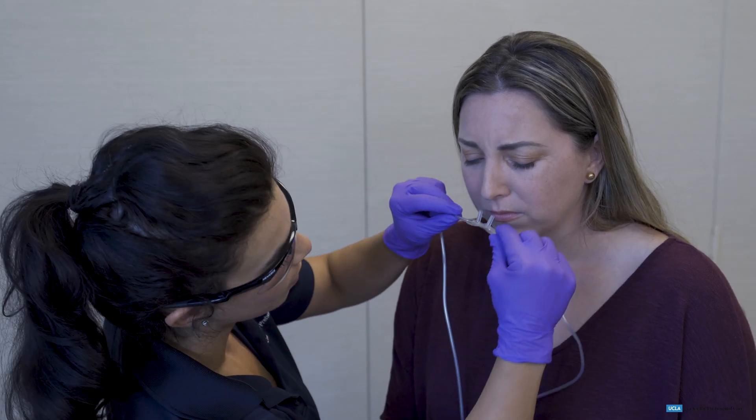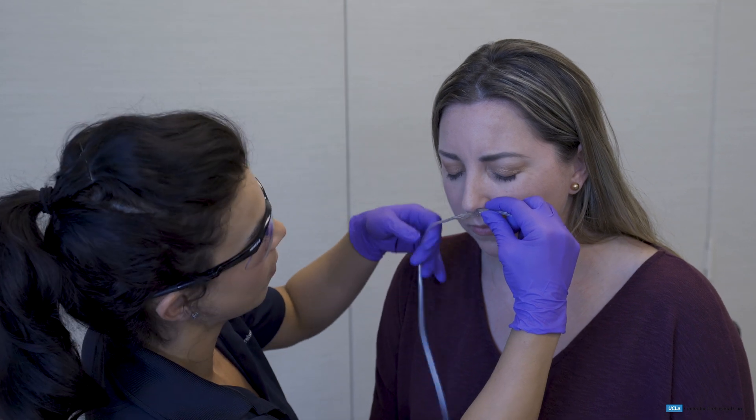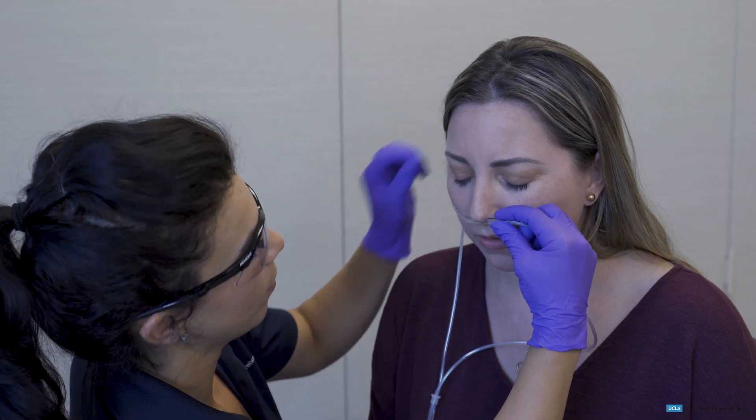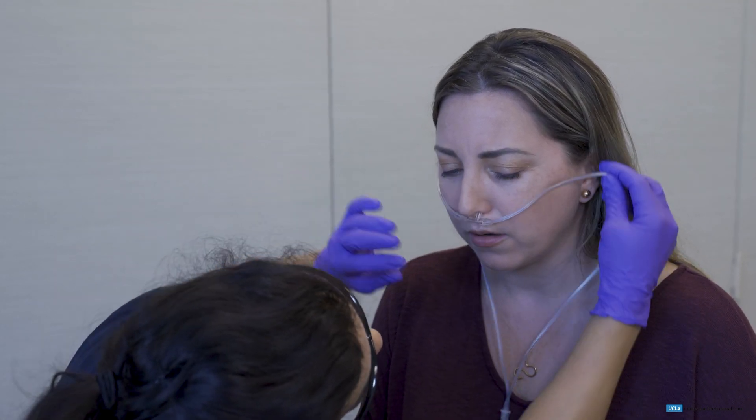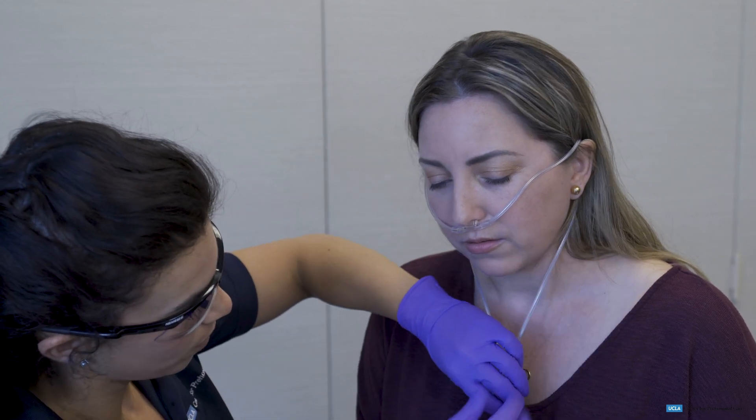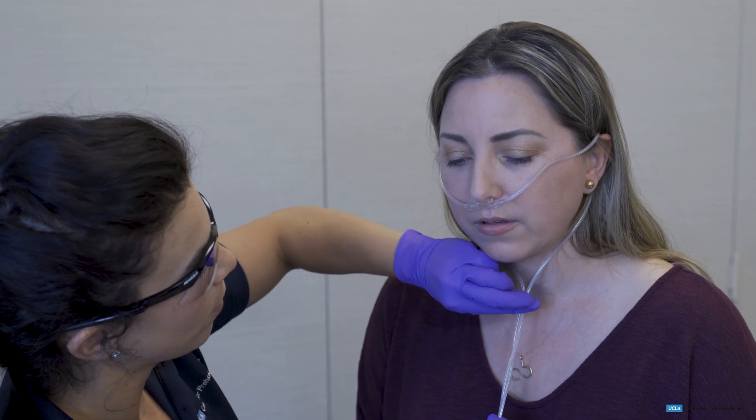To do so, the EMT will place the prongs in the patient's nose, then secure the tubing around the patient's ears and nose, and cinch the tubing underneath the chin.